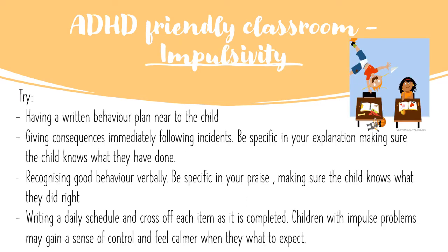For impulsivity: children with ADHD may act before thinking, creating difficult social situations and seeming aggressive or unruly. Try keeping a written behavior plan near the child, give consequences immediately, and be specific in your explanation so the child knows what happened and what was done. Recognize good behavior verbally — again, be specific in your praise so the child knows what they did right. Writing a daily schedule and crossing off each item as it is completed can help children with impulse problems gain a sense of control and feel calmer when they know what to expect.